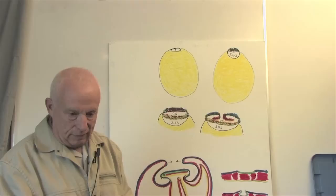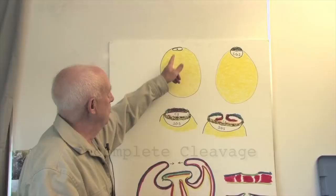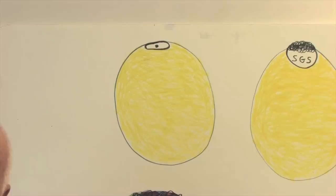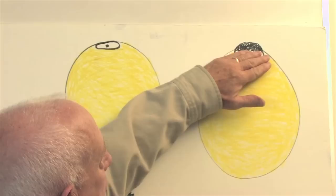Cleavage in the chick is very different than cleavage in the frog, sea urchin, and amphioxus. It's what's called incomplete cleavage. This little blastodisc cleaves, but the cleavage planes cannot get through the yolk because the yolky cytoplasm is much too dense. So only cleavage occurs in that little blastodisc, and this blastodisc is now cellular — we call it the blastoderm.